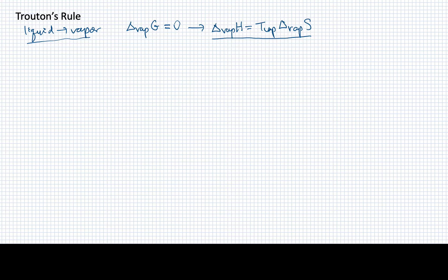It turns out that for a lot of liquids, especially liquids that don't have strong intermolecular forces like hydrogen bonding, we call these non-associative liquids. So they're not forming strong complexes with molecules of the same type. We find that the entropy change for vaporization tends to range between about 85 and 88 joules per mole Kelvin.